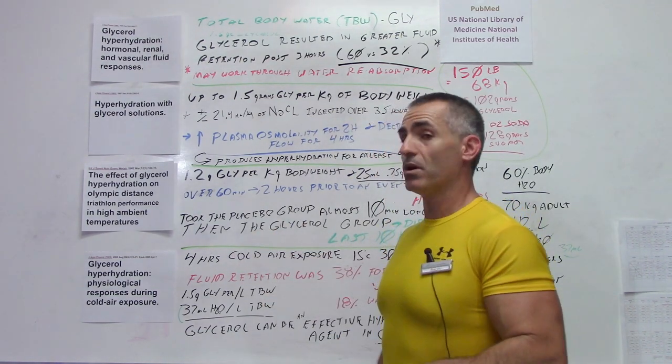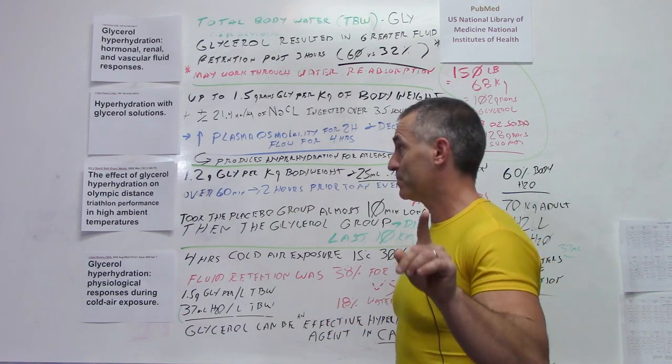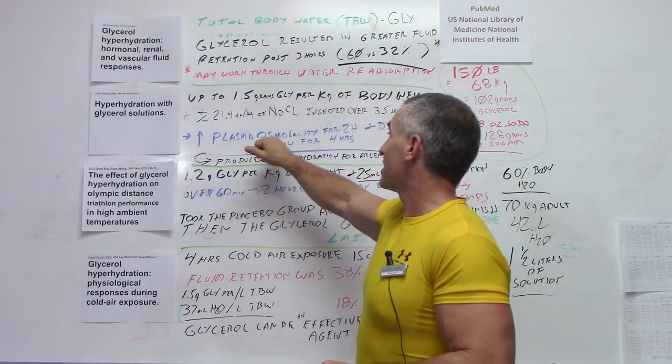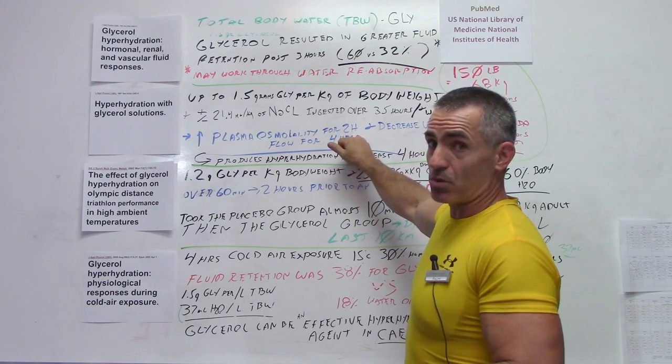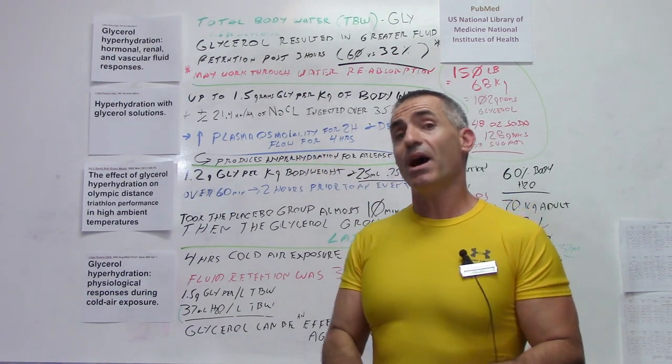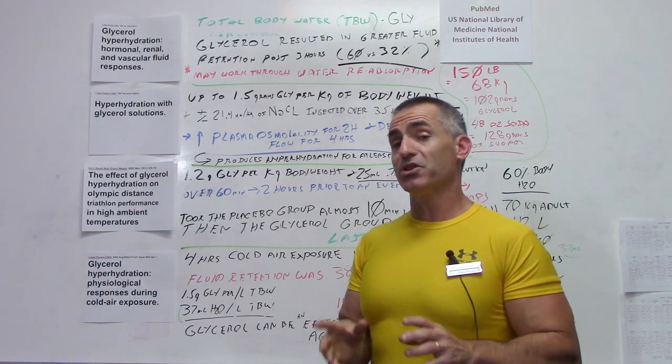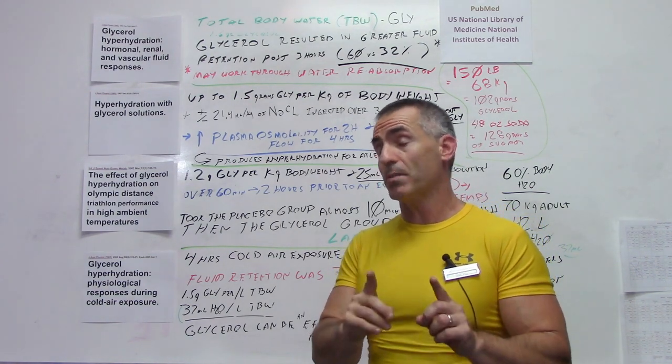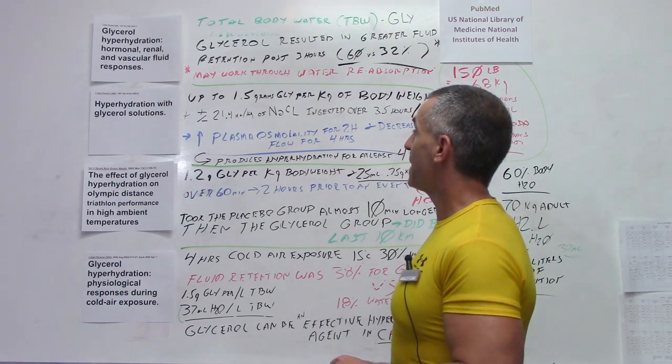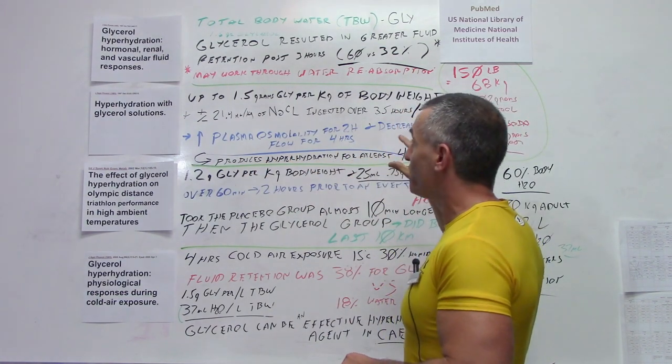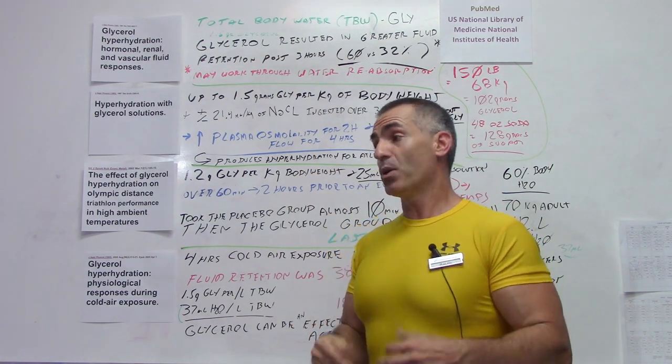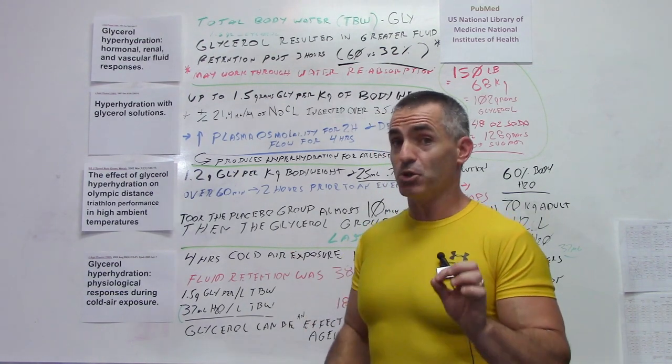A group with glycerol added to the salty water and a group without. Now remember, salt's going to help with water retention too. Over the salt water only group, the plasma osmolality lasted for about 2 hours in the glycerol group, and they had decreased urine flow for about 4 hours. Keep the 4 hours in mind - that's what we're looking for, about the average impact glycerol is going to help you in dealing with either extreme heat or extreme cold. Researchers came to the conclusion that this produces hyperhydration for at least 4 hours.